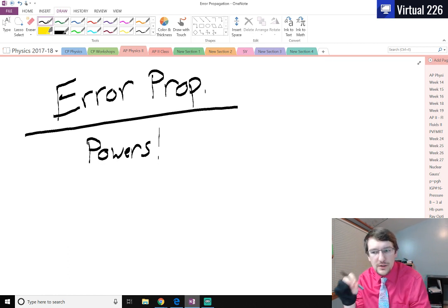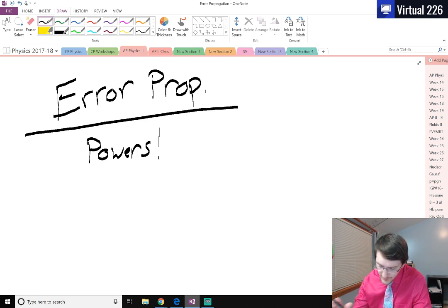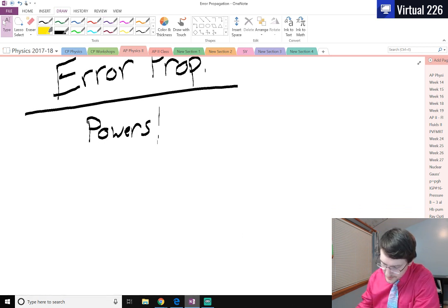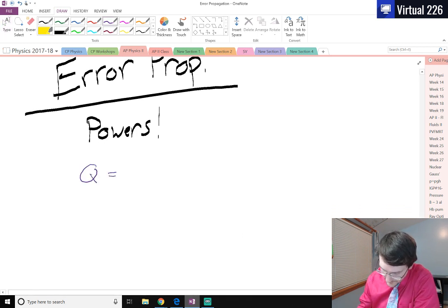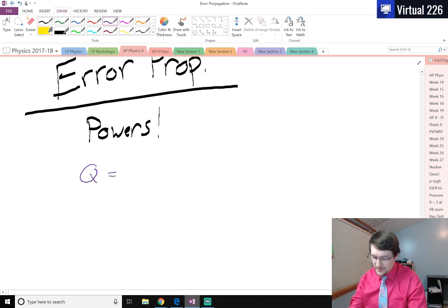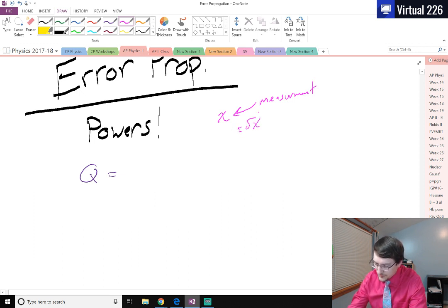If we have a measured quantity raised to some known power, we still have to propagate errors through it. The way we do this is using the same convention where q is the value of the measurement raised to the power and del q is the uncertainty of that value. q is just your measurement, whatever your measurement is. Now we're going to use the symbol x - this is just some measurement. Technically it's x plus or minus del x.